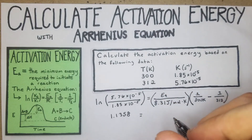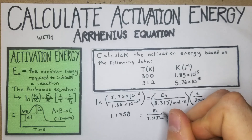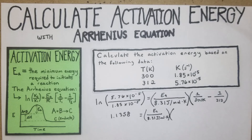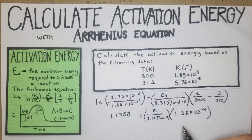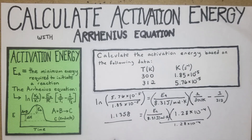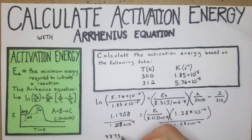So 1.1358 equals Ea over 8.31 joules per mole·Kelvin times 1.28×10⁻⁴. We divide both sides by 1.28×10⁻⁴, and we get 8873.44 equal to Ea over 8.31.